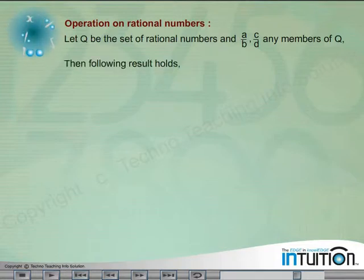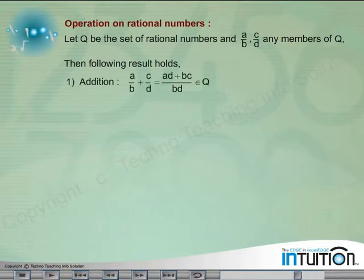First, addition: A by B plus C by D is equal to AD plus BC divided by BD belongs to Q.